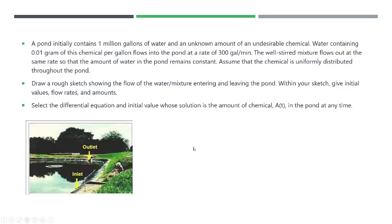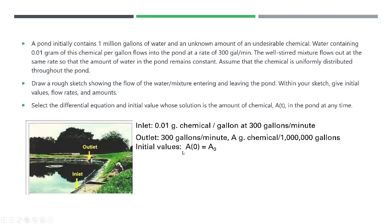And the initial condition is some unknown amount of undesirable chemical, which we can write as A(0) = A₀. So that's our rough sketch, more or less.